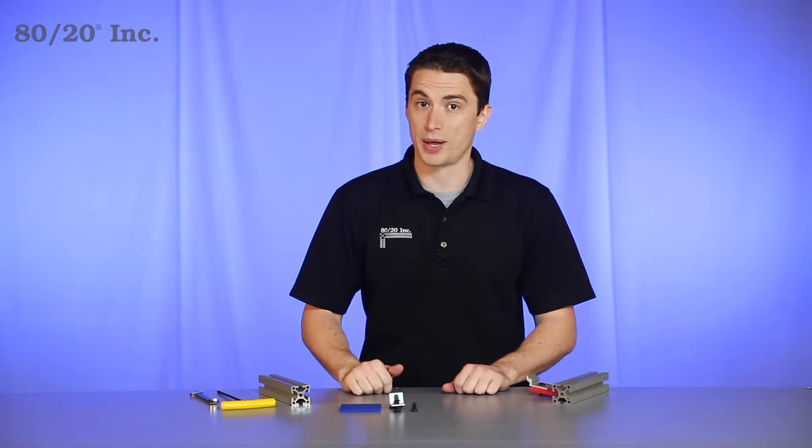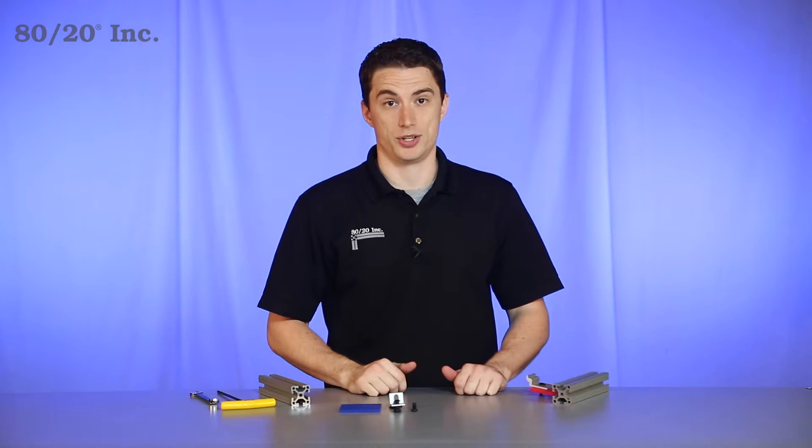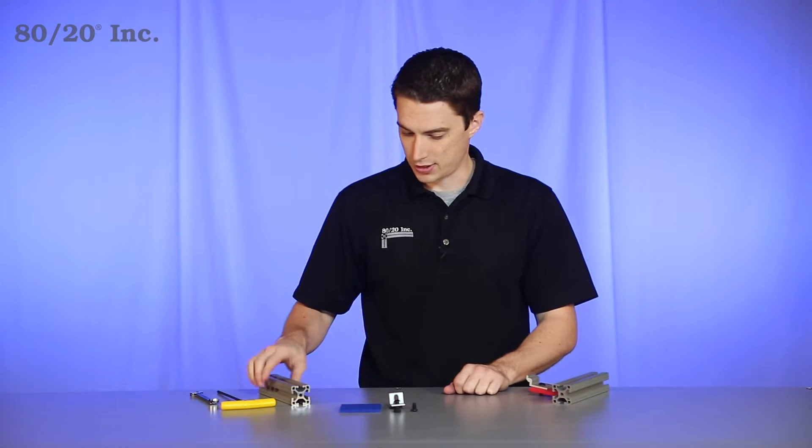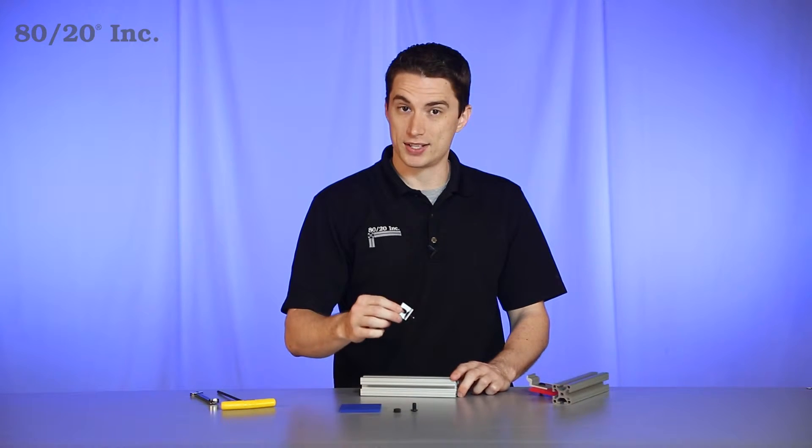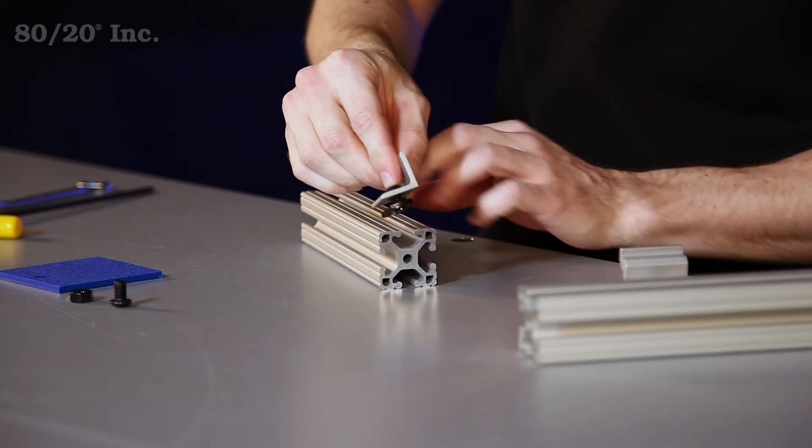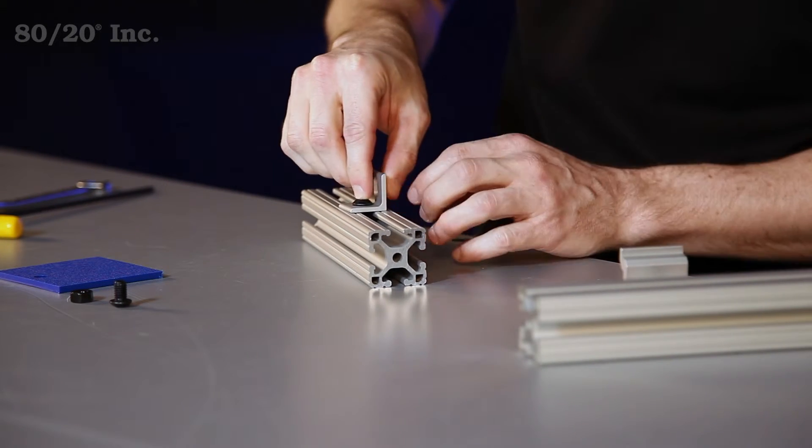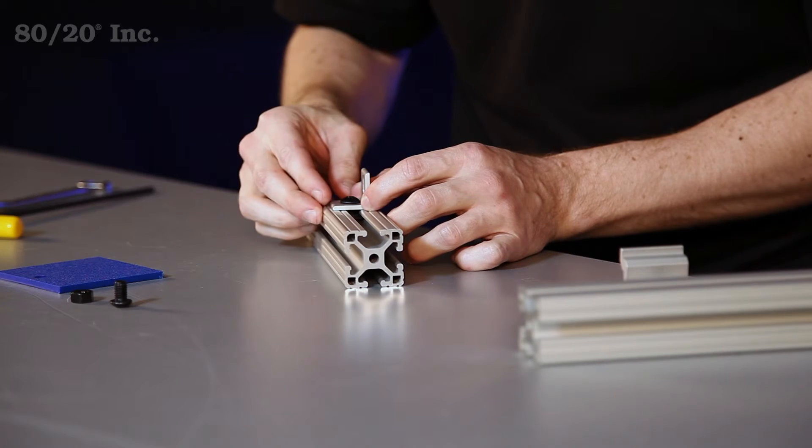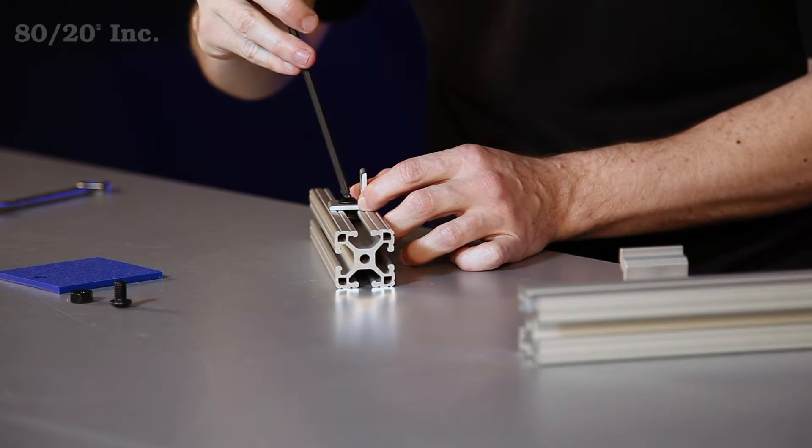Now when it comes to installing the panel mount bracket, it really couldn't be easier. The first thing you'll do is take your profile, take the bracket itself, and preload a T-nut and a bolt into it. You'll slide it into the open T-slot and find your desired location, and you'll tighten it down with a wrench.